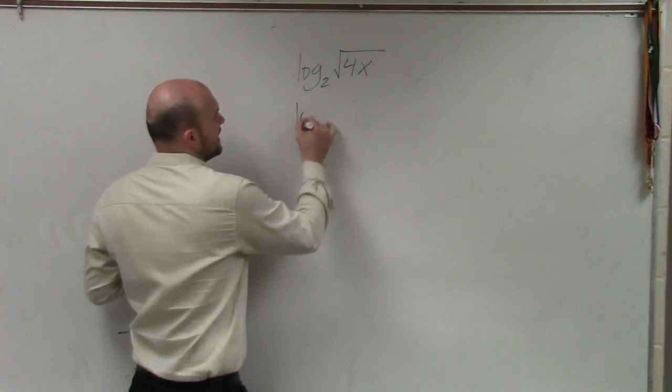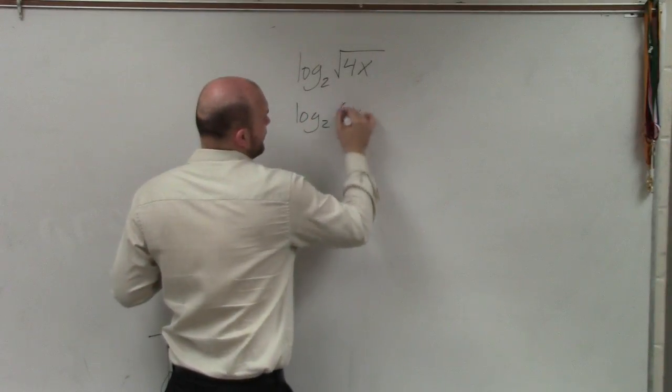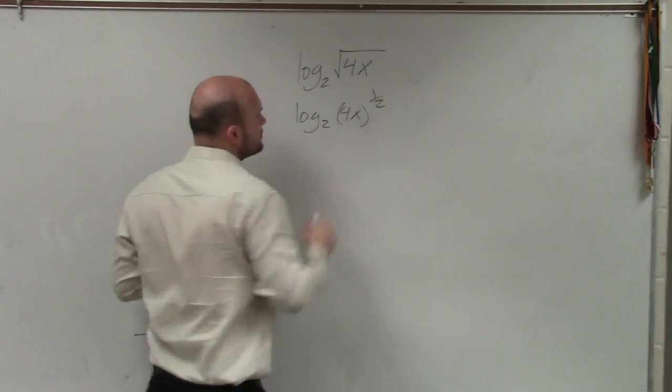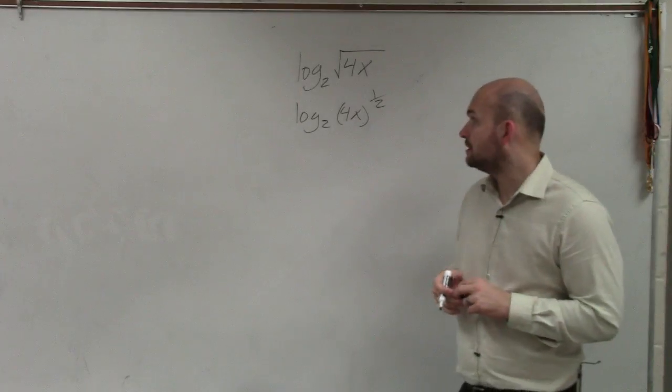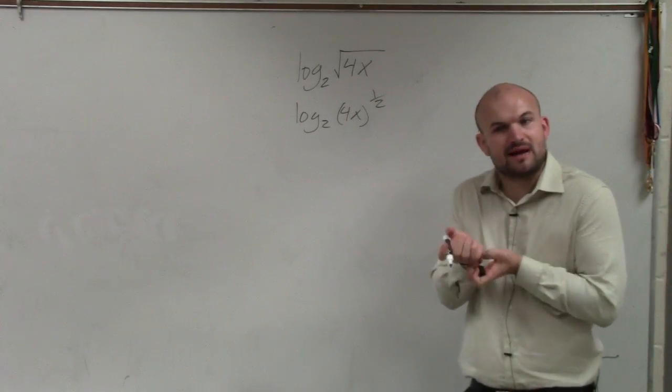So the first thing that I would do is rewrite log base 2 of the square root of 4x raised to the 1 half. What kind of rule is that? It's just rewriting a radical as a rational power.